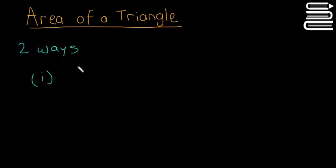So I'll just write that two ways. You have number one: A is equal to half by base multiplied by height.